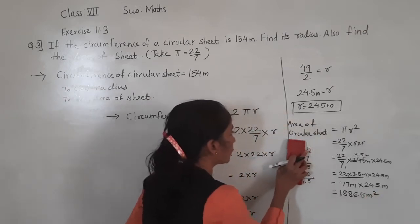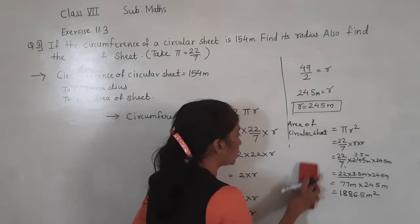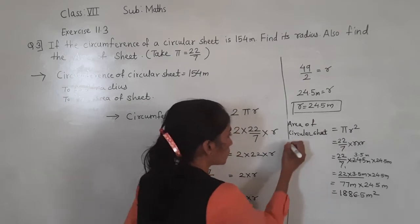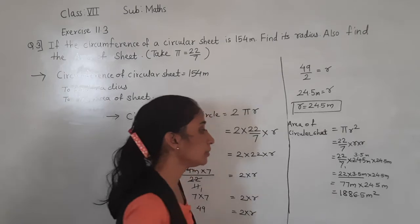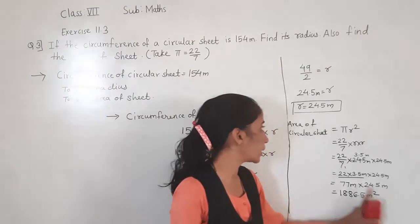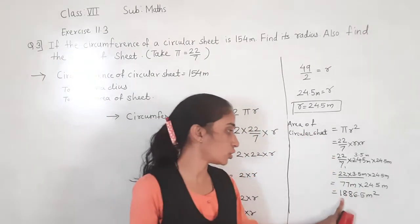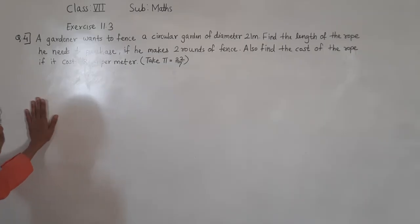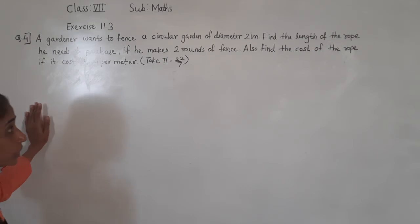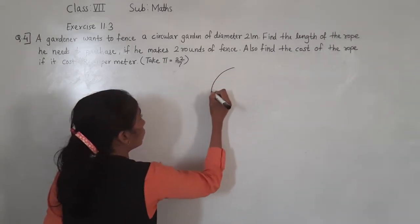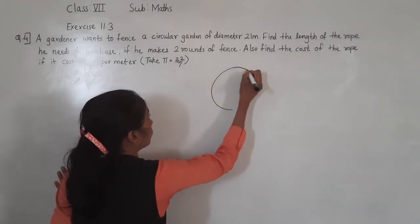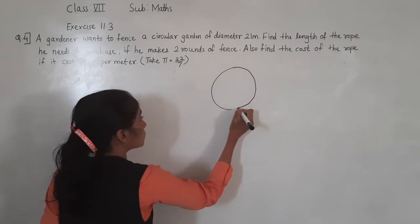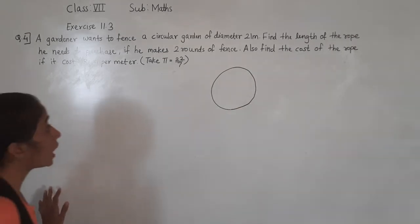So the area of the circular sheet is 1,886.5 metre square. Now question number 4: a gardener wants to fence a circular garden of diameter 21 metres.